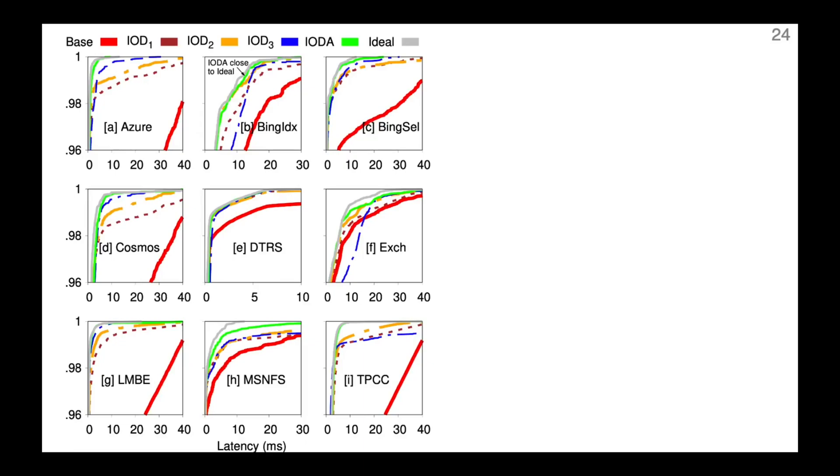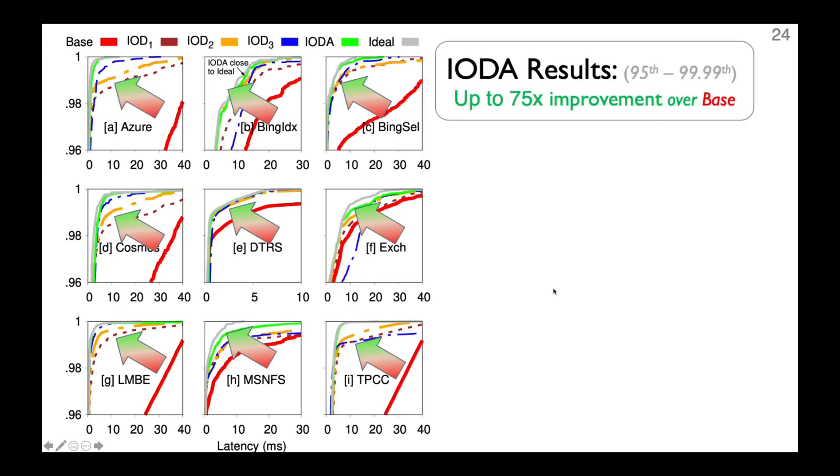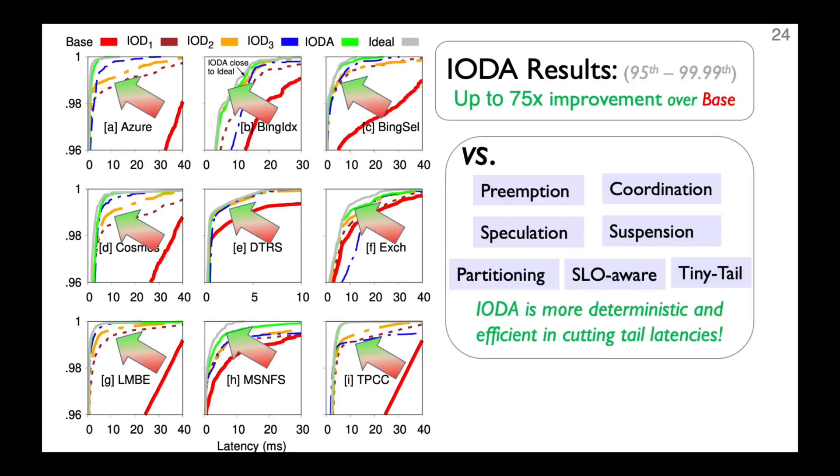Here we show all the CDF graphs for nine trace workloads. All of them show a similar pattern that our interface changes can provide consistent performance improvements towards the no-GC case. Specifically, between 2-9s and 4-9s percentiles, IODA can improve latency by up to 75 times compared to the baseline. When compared to state-of-the-art approaches, IODA is also more deterministic and efficient in tail cuttings.